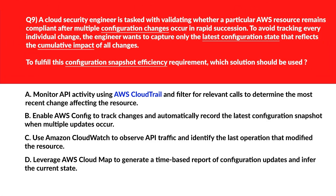Option A says: monitor API activity using AWS CloudTrail and filter for relevant calls to determine the most recent change affecting the resource. CloudTrail logs events but doesn't capture complete post-change resource configuration. Hence incorrect. Option B says: enable AWS Config to track changes and automatically record the latest configuration snapshot when multiple updates occur. AWS Config records configuration snapshots efficiently and maintains the final state after updates. Let's keep this.